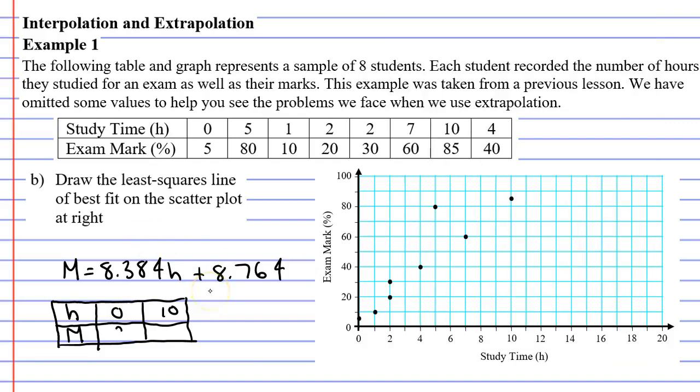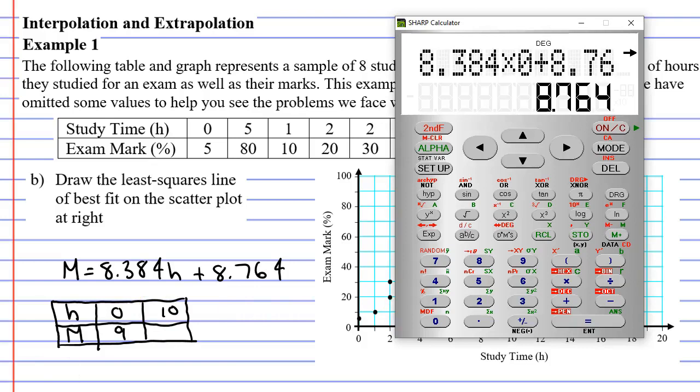Now I'm just going to round this to 9 and the reason I'm doing that is whenever you're plotting points on a graph there's no point having decimals because we're not that accurate when we draw graphs. So let's do the next point when H is 10.